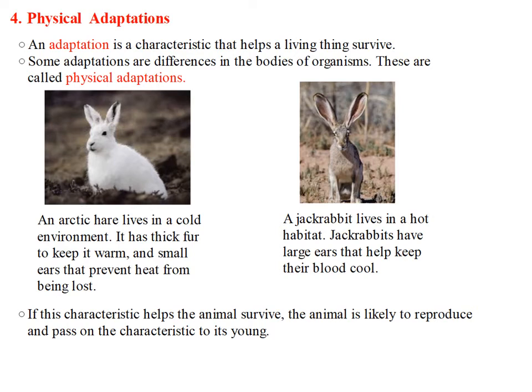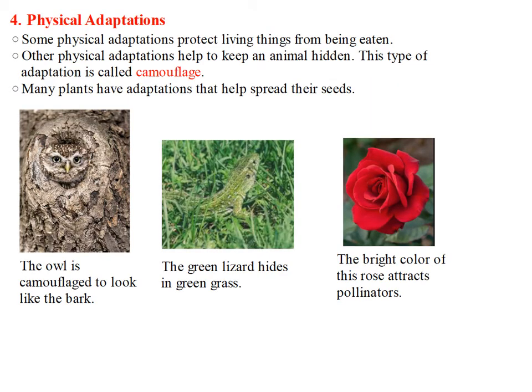If this characteristic helps the animal survive, the animal is likely to reproduce and pass on the characteristic to its young. Now, some physical adaptations protect living things from being eaten. Other physical adaptations help to keep an animal hidden. This type of adaptation is called camouflage. Many plants have adaptations that help spread their seeds.